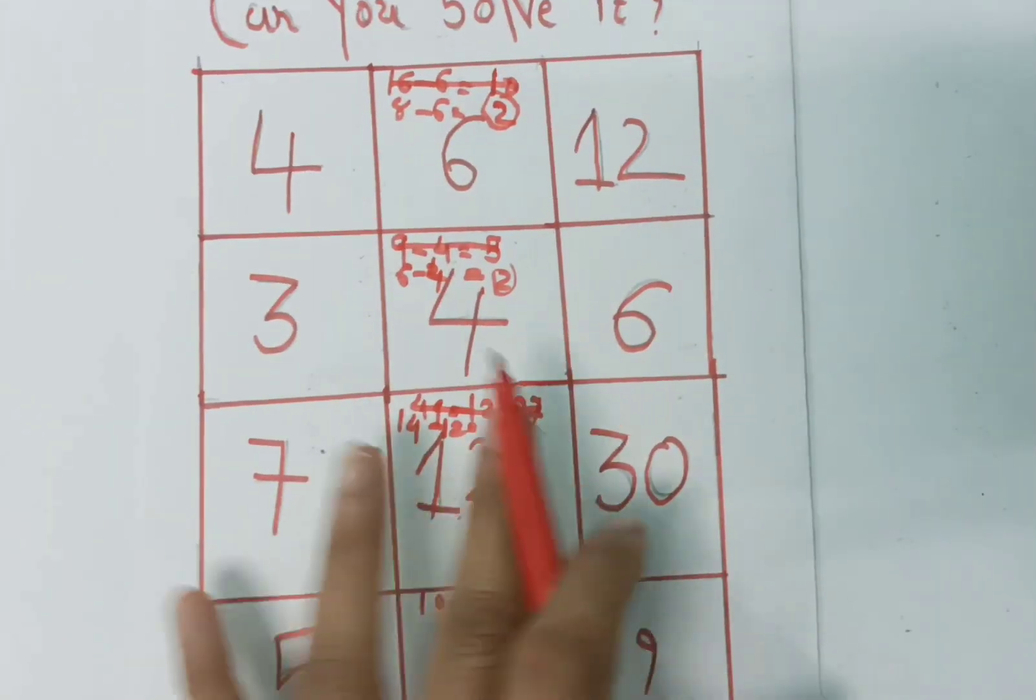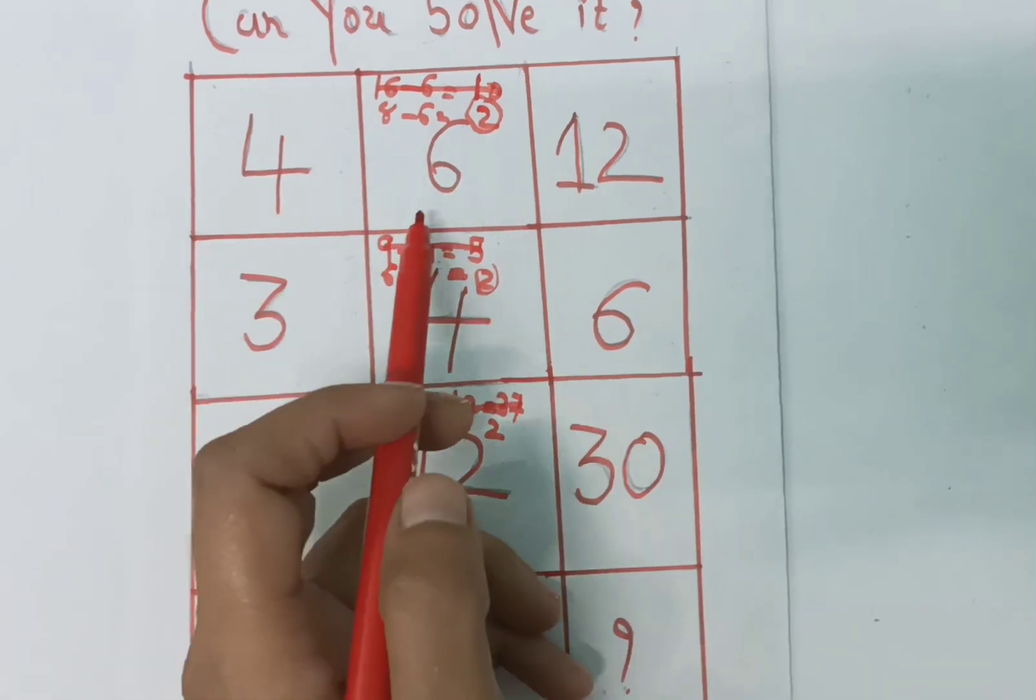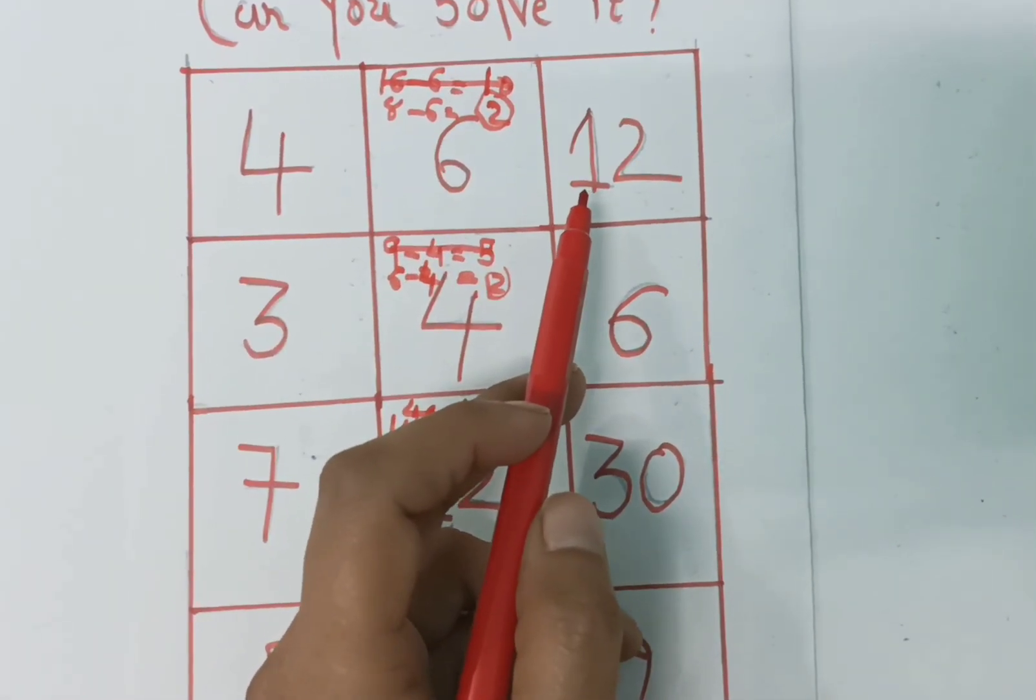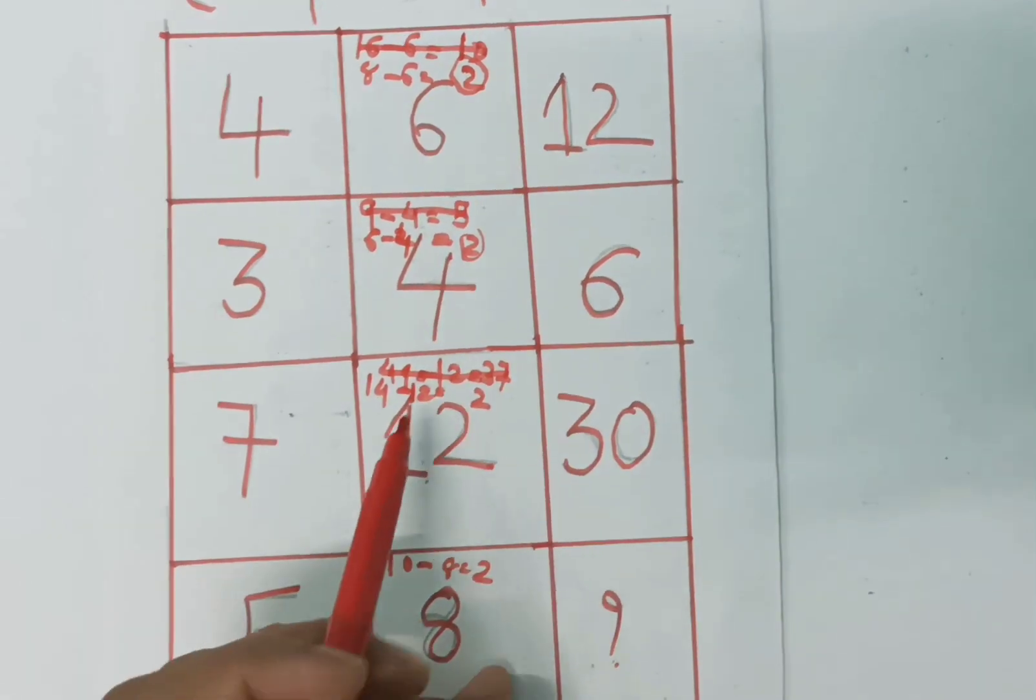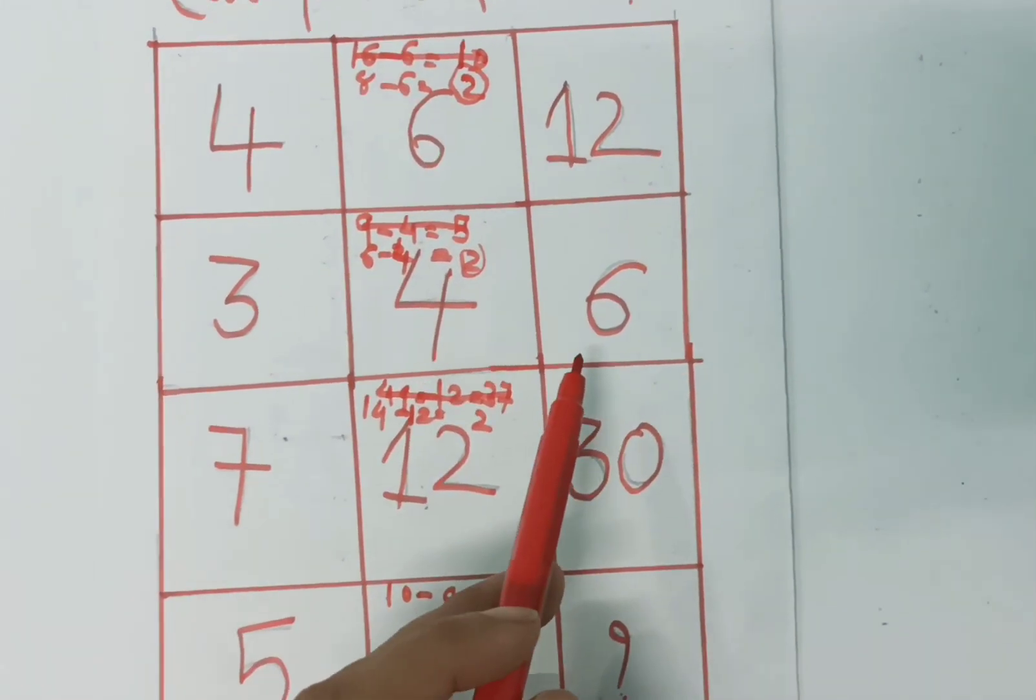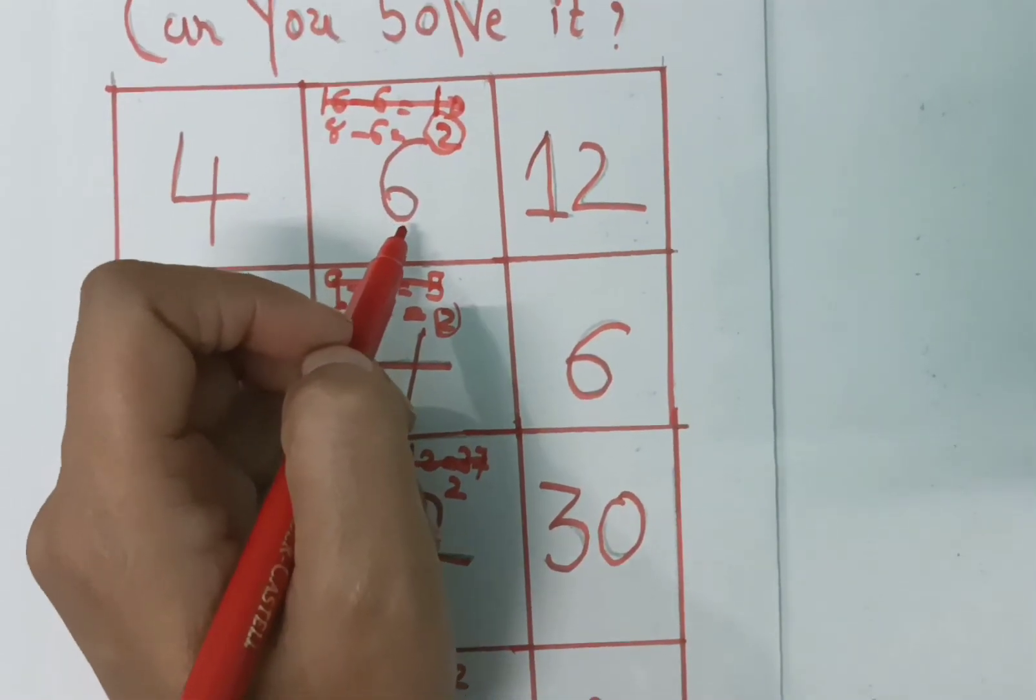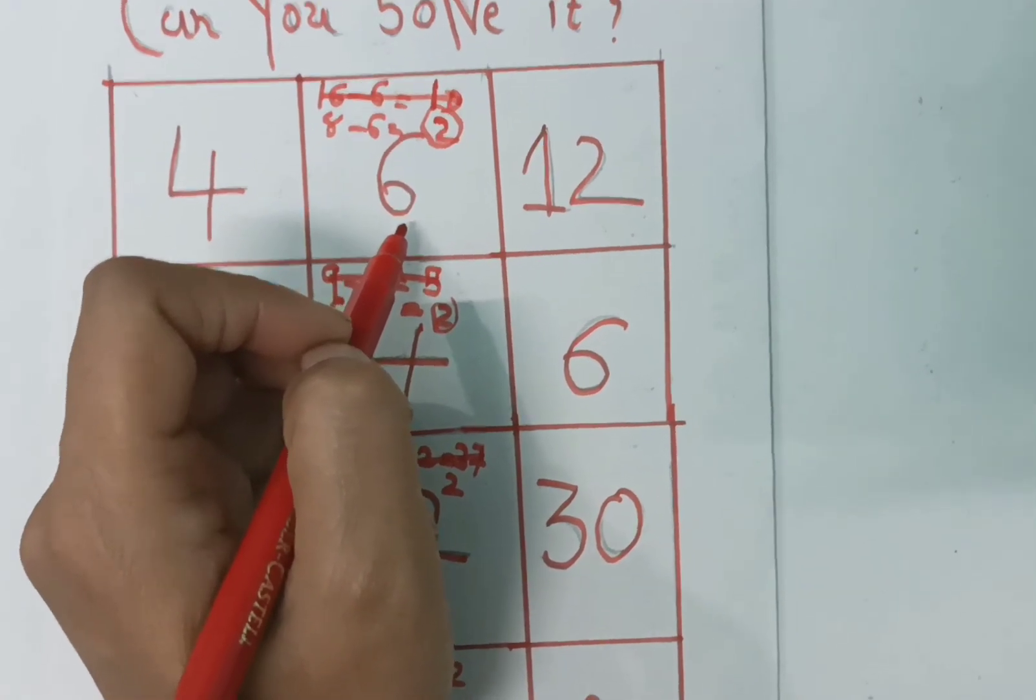here we multiply with 2, here we can multiply with 2 or 3. If we multiply it with 2, 6 times 2 is 12, but here 4 times 2 is 8, so this is not possible. So we can multiply it with 3.